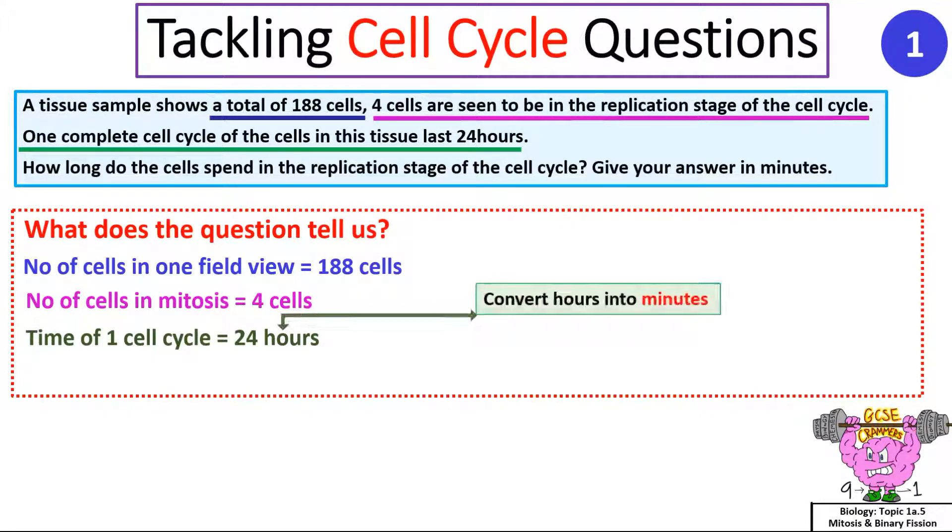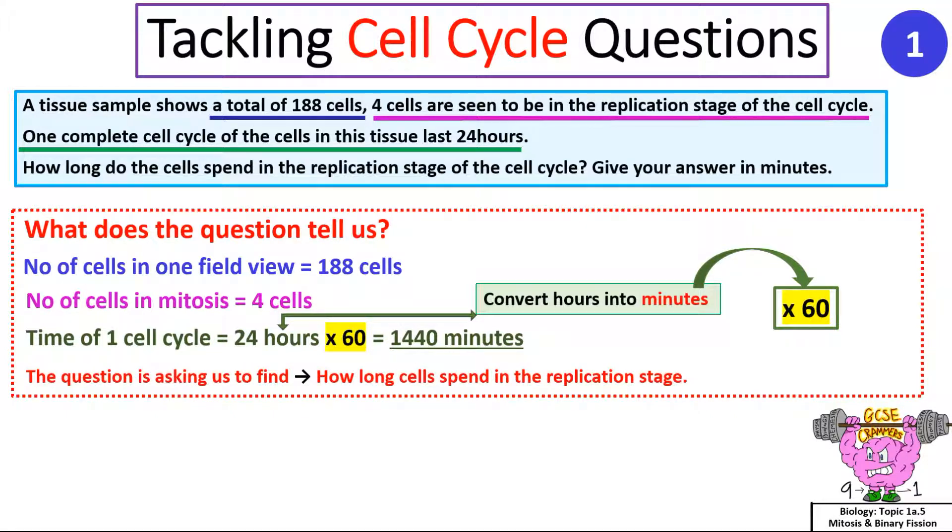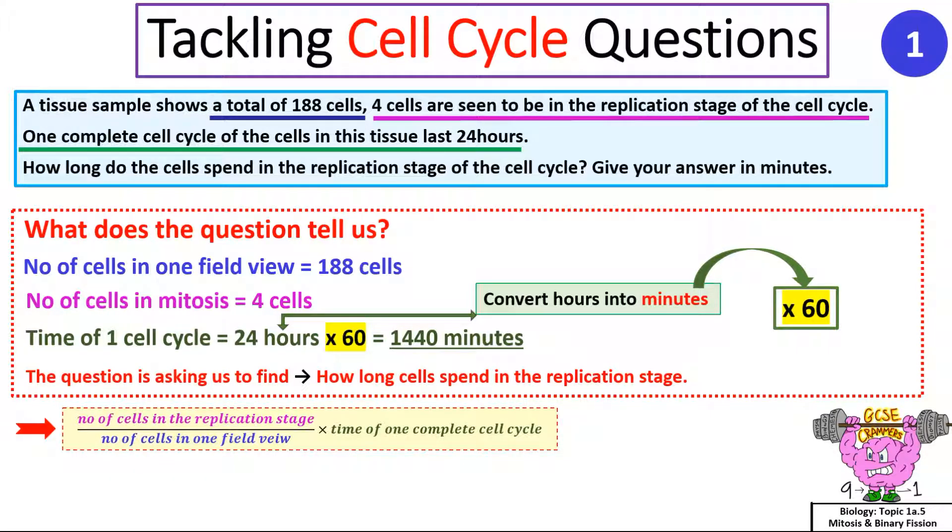Remember, we must convert hours into minutes by multiplying by 60, which equals 1440 minutes. Finally, the question is asking us to find how long cells spend in the replication stage. The equation is number of cells in the replication stage divided by the number of cells in one field view, multiplied by the time of one complete cell cycle, which equals 4 divided by 188 multiplied by 1440. That equals 30.6382978723. The question asks you to give your answer in minutes, so we round the answer up to 31 minutes.